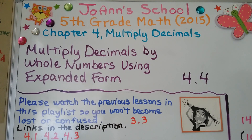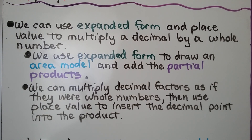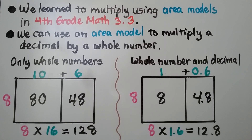Lesson 4.4: Multiply Decimals by Whole Numbers Using Expanded Form. We have several links in the description to help you if you need them. We can use expanded form and place value to multiply a decimal by a whole number. We use expanded form to draw an area model and add the partial products. We can multiply decimal factors as if they were whole numbers, then use place value to insert the decimal point into the product. We learned to multiply using area models in 4th grade math, Lesson 3.3.